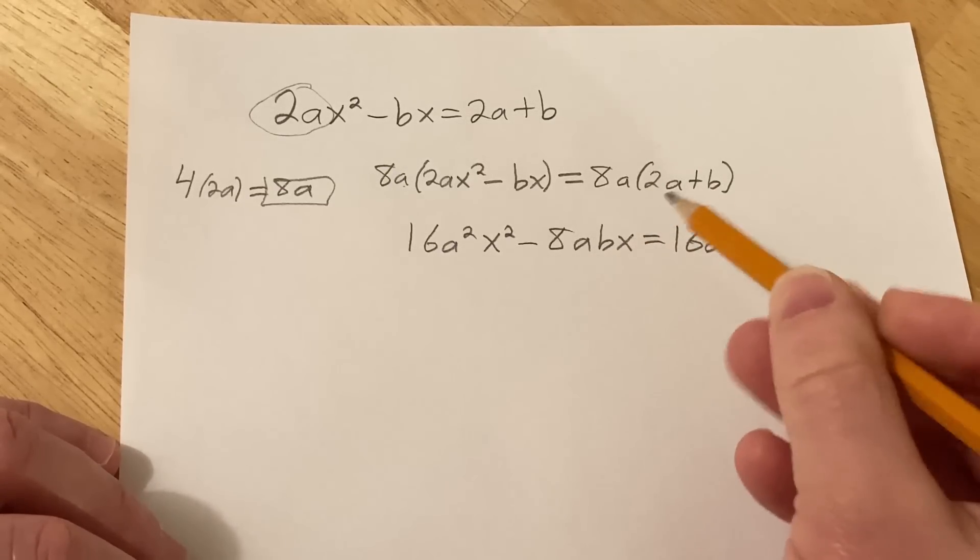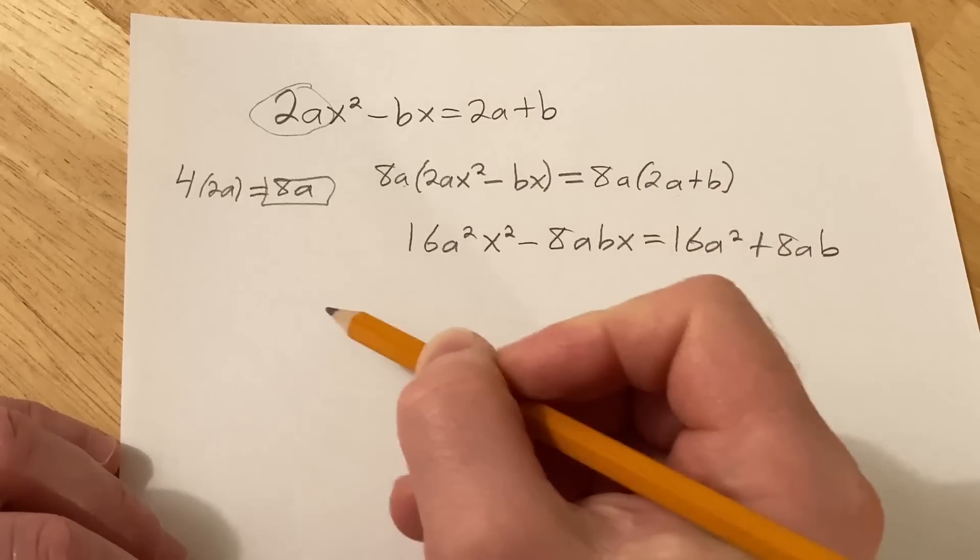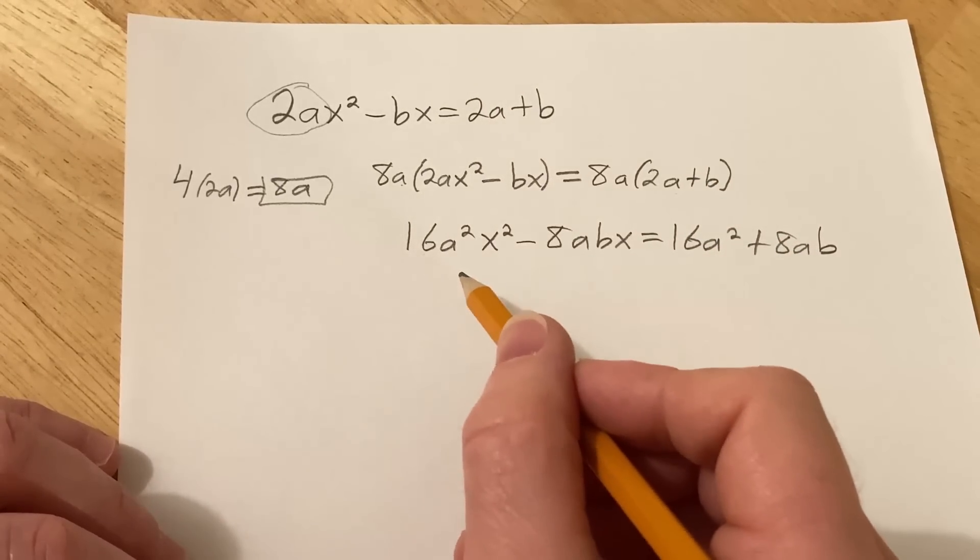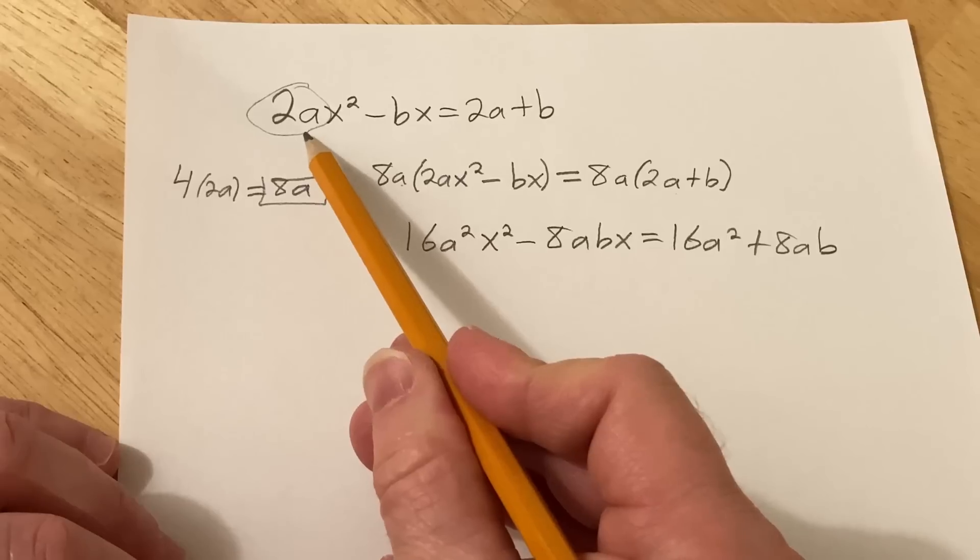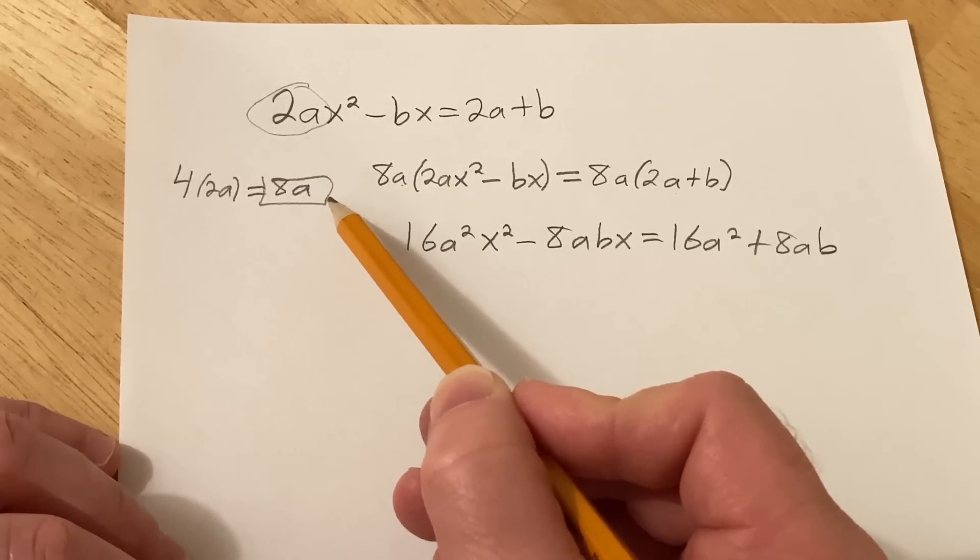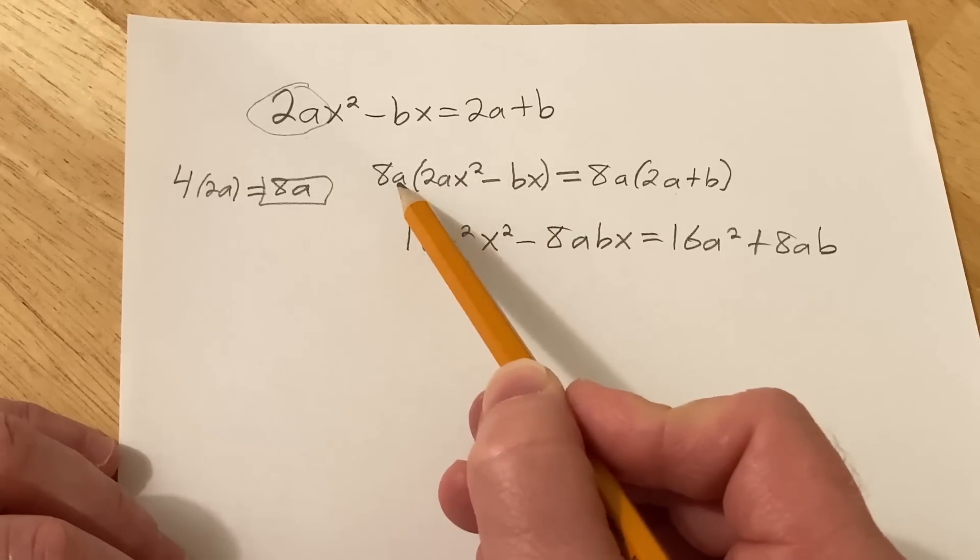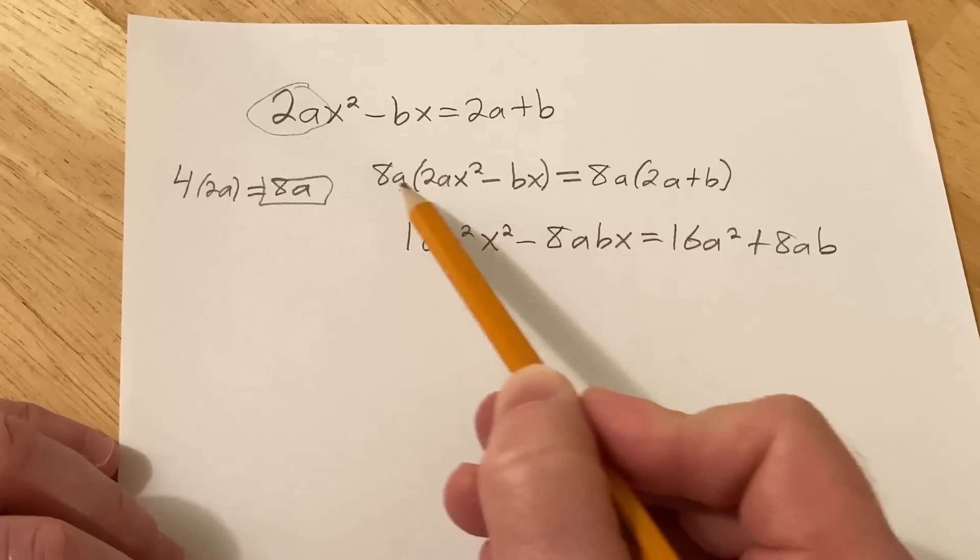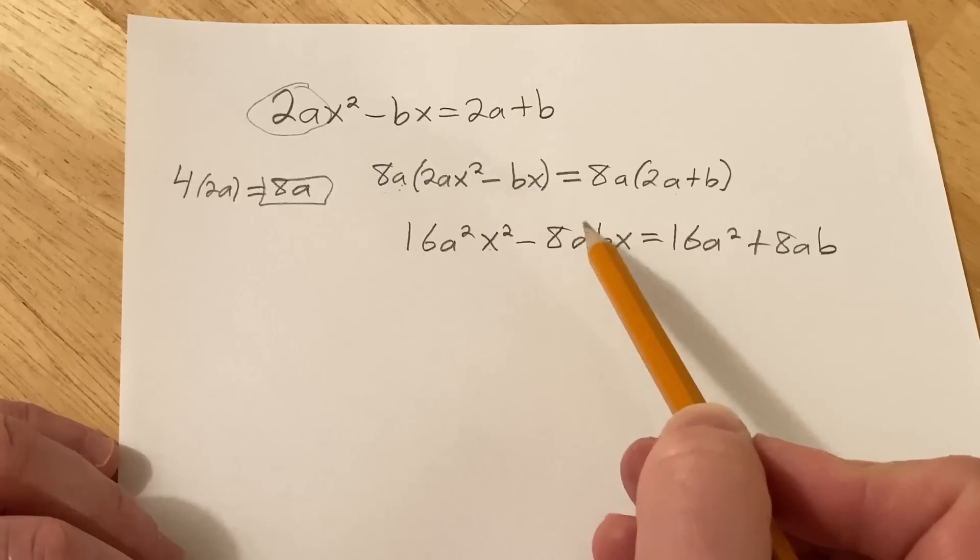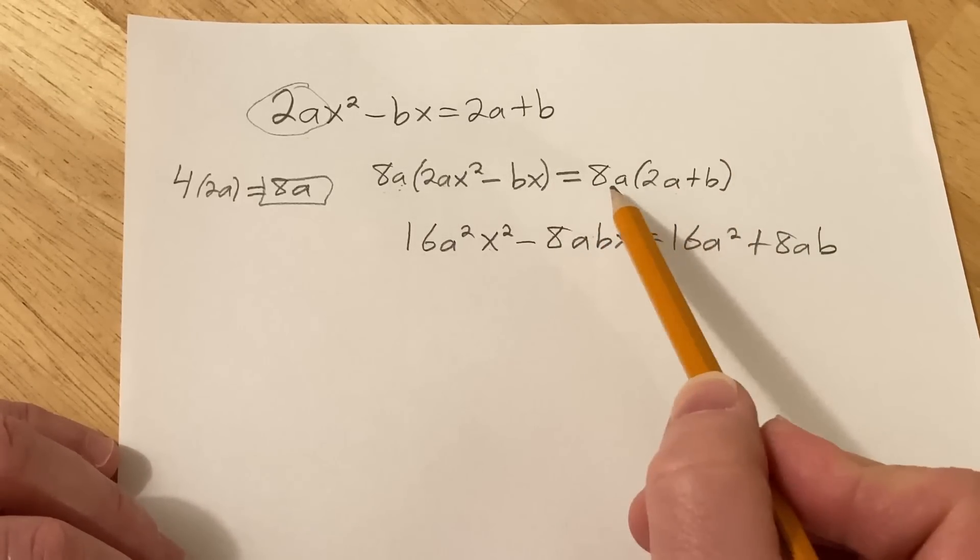And this times this is going to be minus 8abx. Looks okay. This times this will be 16a squared. A times a is a squared. Then 8a times b is 8ab. Really nice. So we're here. Looks really messy. Let me just check that. So we multiplied it by 4. That's the first step. And then this new method says that you multiply this by your entire equation.